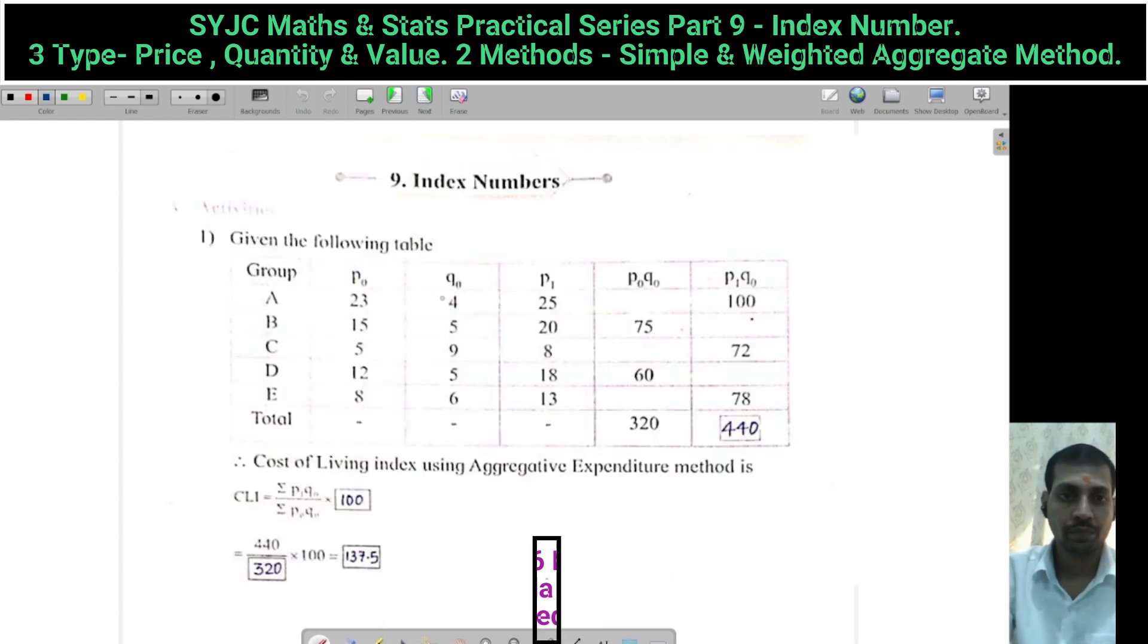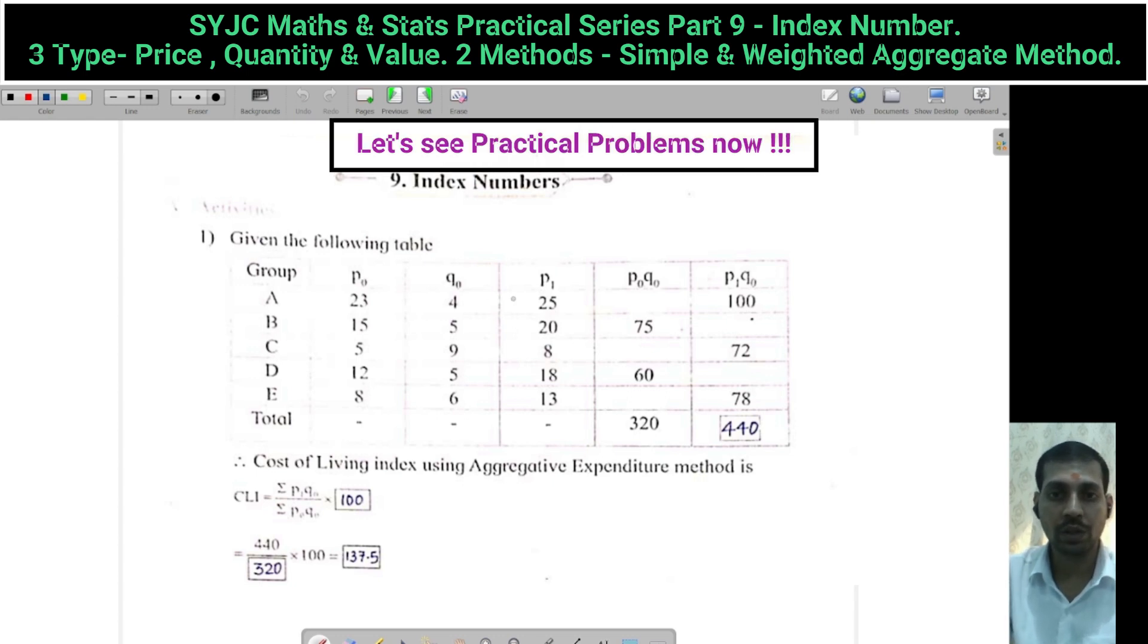For Index Number Practical: P0 is base year price, Q0 is base year quantity, P1 is current year price, Q1 is current year quantity. You have P0, Q0, P1, and Q1.